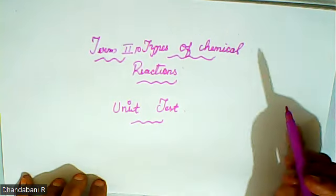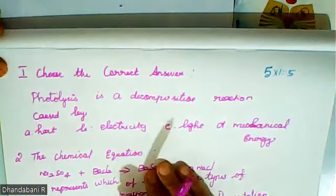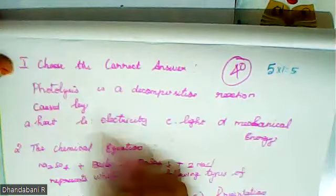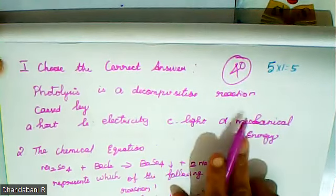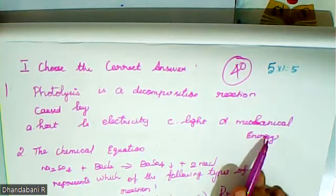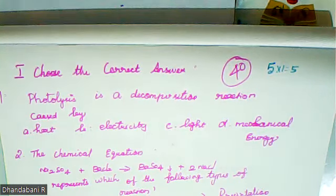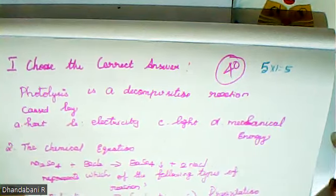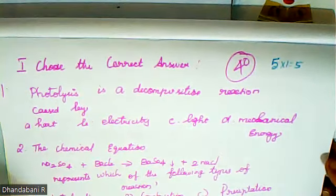Now we are going to write a small unit test in the type of chemical reaction, second term, first lesson in the chemistry part. Here we are going to write 40 marks in the question paper. First one is choose the correct answer: photolysis decomposition reaction is caused by which option? Read all the questions and answers — these are all book back answers.